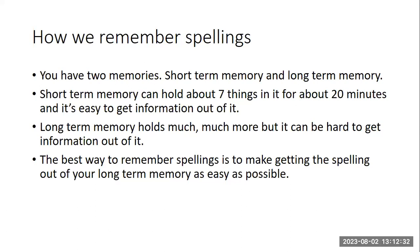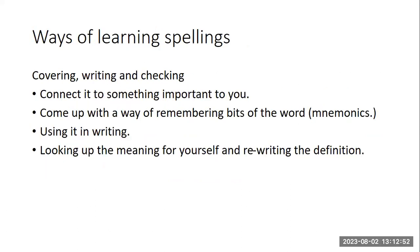The best way to remember spellings is all about getting them out of your long-term memory as easily as possible, and a lot of that hinges on attaching as many things to that word as you can — learning it in different ways. The traditional method taught at school is covering, writing, and checking: you look at your list, try to remember the spelling, cover it up, write it down, then double-check. Unfortunately, that doesn't work for everyone, especially people with dyslexia or other neurodivergent conditions. So here are some potential alternatives.